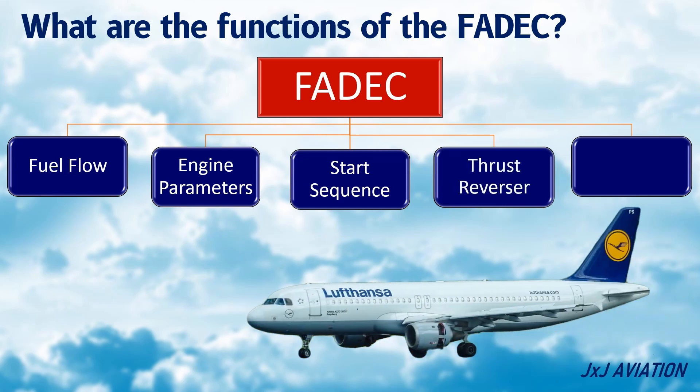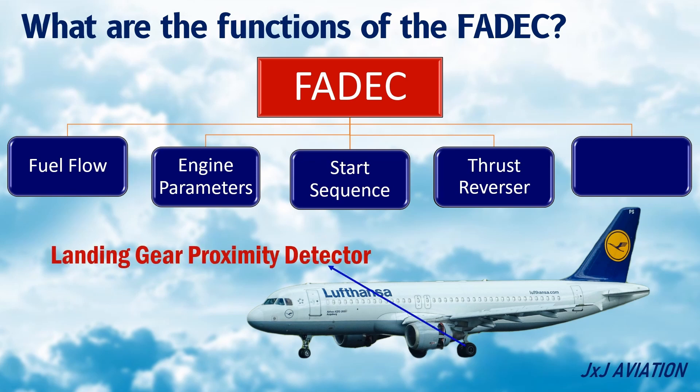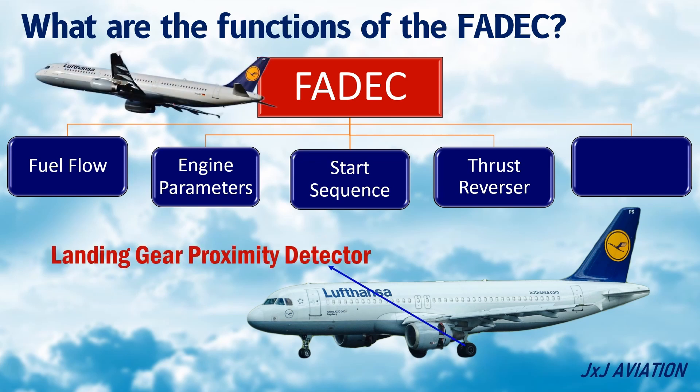For the activation of the thrust reversers, FADEC uses information from landing gear proximity detectors to know whether the aircraft is on the ground or in flight. This is to prevent any accidental deployment of the thrust reversers when the aircraft is in flight.